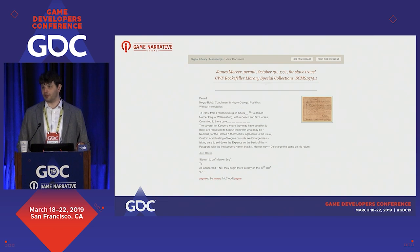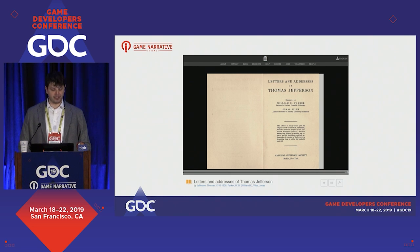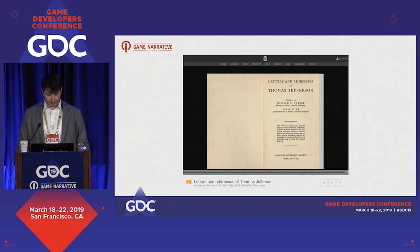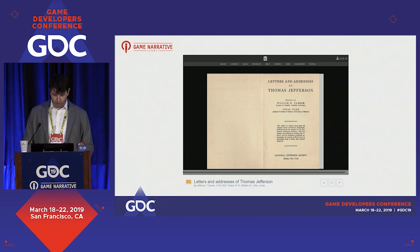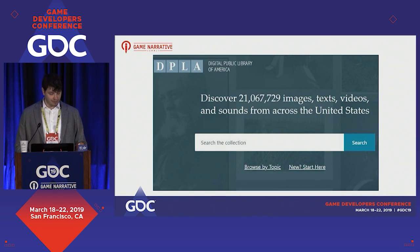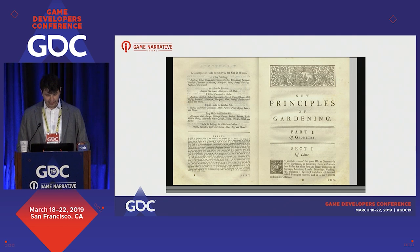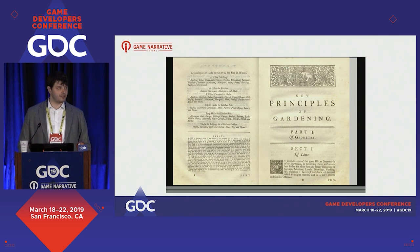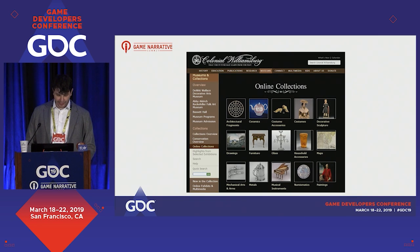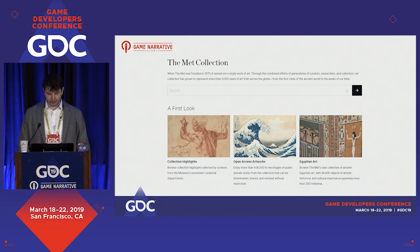Bibliographies will also show published primary sources like collections of letters and even books and print media from your period. These are available in the public domain and many are complete online, like this collection of Thomas Jefferson's letters. Some great sites include archive.org, the Digital Public Library of America, and even Google Books. For Cassius, I found many complete digital copies of books actually owned by George Washington and Thomas Jefferson, like this gardening manual, available complete and for free online. You also want to visit the websites of relevant historic sites and museums for visual evidence — many important museums like the Metropolitan Museum of Art, the Art Institute of Chicago, and the British Museum have nearly their complete collections viewable online, sometimes with royalty-free images.